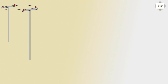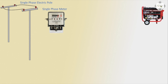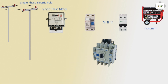First, the electric pole — electric pole positive and negative. Terminal 2 meter, single phase meter, generator or 2-pole DP using 1 electric pole. 2 generator or magnetic contacts are used.